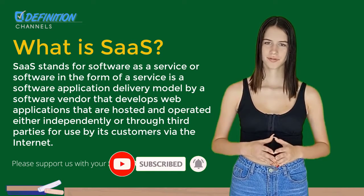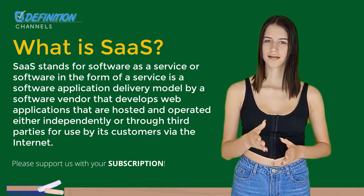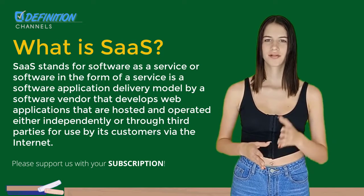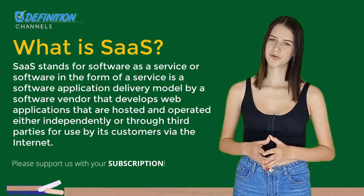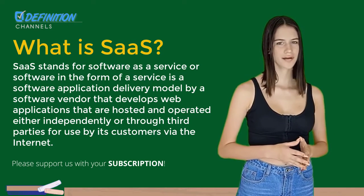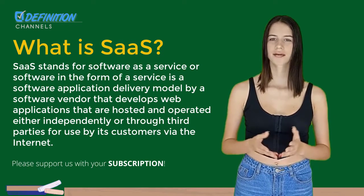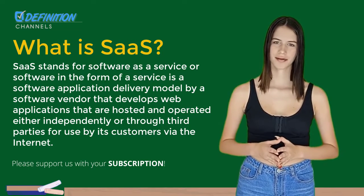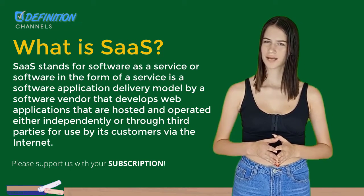Definition of SAWS. What does SAWS look like? What is SAWS? SAWS stands for Software as a Service, or Software in the Form of a Service. It is a software application delivery model by a software vendor that develops applications hosted and operated either independently or through third parties for use by its customers via the internet.